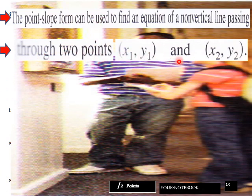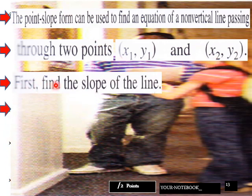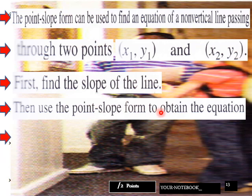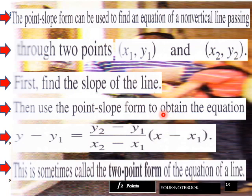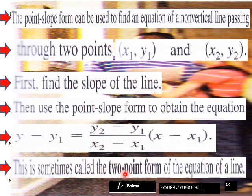Okay, notebook page 13. This point slope form can be used to find an equation of a non-vertical line passing through two points, x one, y one, x two, y two. So first find the slope of the line, then use point slope form to obtain the equation. So y one minus y, y minus y one equals, and then here's our slope formula that's being put out front of our x one, x minus x one, situation here. So that is another way. This is sometimes called the two point form of the equation of line, because we got to have y one, y two, and then x one, x two to find our slope. So we can do it that way.